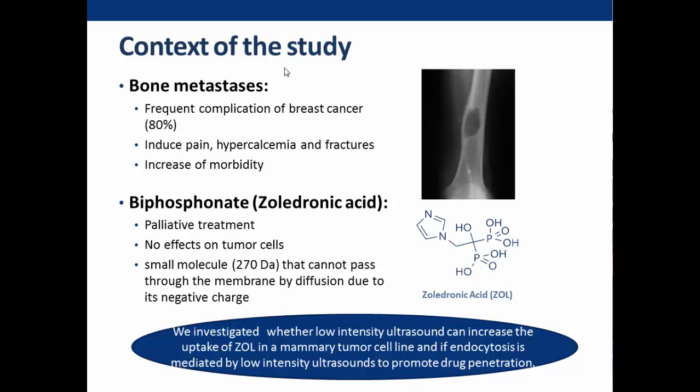One of the treatments is the use of bisphosphonates, mainly zoledronic acid. It is a drug used as a palliative treatment because it has a high affinity for the bone but is not bioavailable for the tumor, although it can have a direct anti-tumoral effect. However, the quantity of zoledronic acid is not enough to penetrate inside the tumor, so it blocks osteolysis but does not act directly on the tumor.